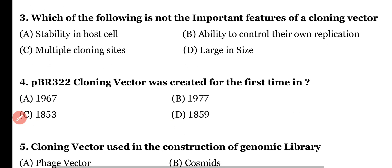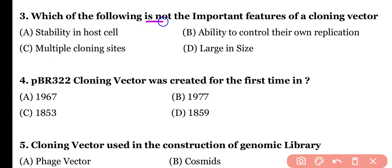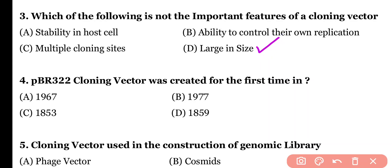Question 3. Which of the following is not an important feature of a cloning vector? Stability in host cell, ability to control their own replication, multiple cloning sites, or larger in size. The correct answer is option D. Cloning vector size should be small — less than or equal to 10KB. A cloning vector should not be larger in size, so option D is not a feature of a cloning vector.